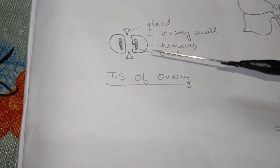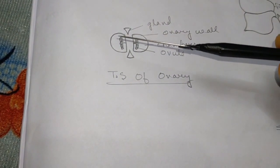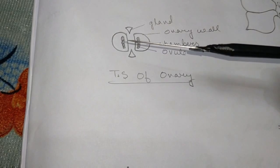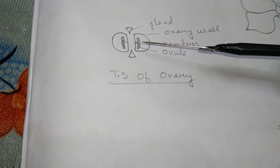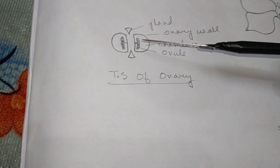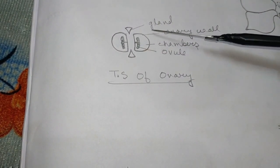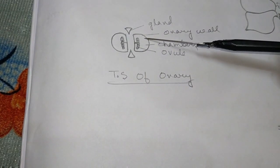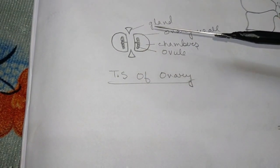This is the transverse section (TS) of the ovary. When you observe under the compound microscope, you will get this image. There are two chambers, so it is called bilocular — two chambers are present. This is the wall of the ovary, these are the ovules, and this is the chamber. So it is a bilocular TS of ovary.